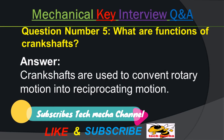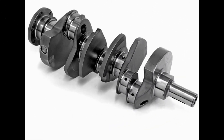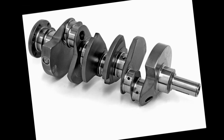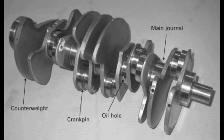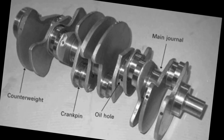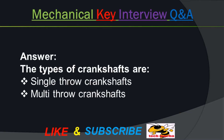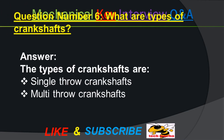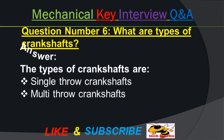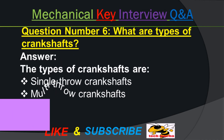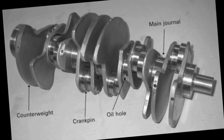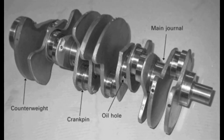Question number five: What is the function of a crankshaft? Answer: A crankshaft is used to convert rotary motion into reciprocating motion. Question number six: What are the types of crankshaft? Answer: The types of crankshaft are single-throw crankshaft and multi-throw crankshaft.